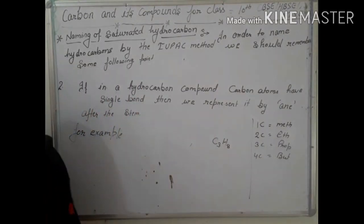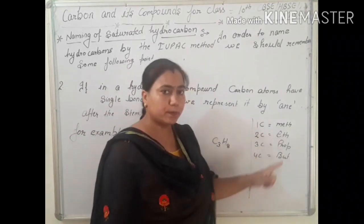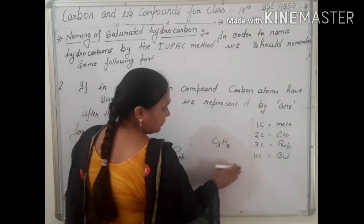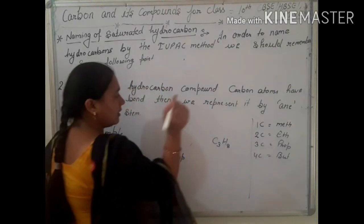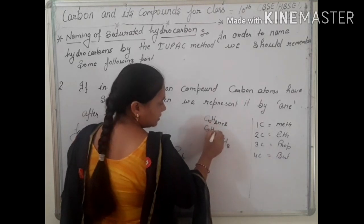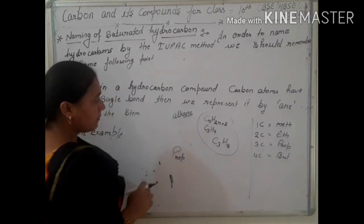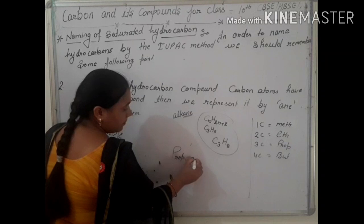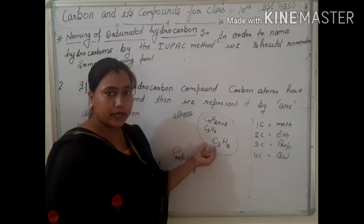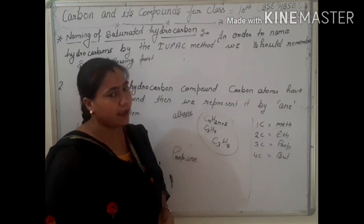Next, for C3H8, the carbon atom count is three, so we use the stem 'prop.' C3H8 follows the general formula for the alkane series: CnH(2n+2). Substituting n=3 gives C3H8, confirming it is an alkane. Since carbon atoms have single bonds, we add '-ane' after 'prop' — so the name is propane.